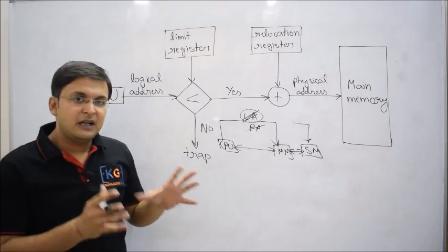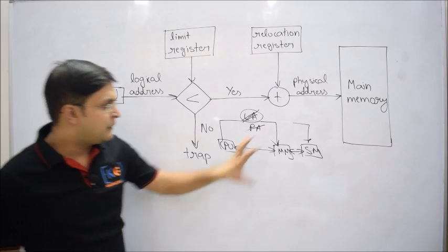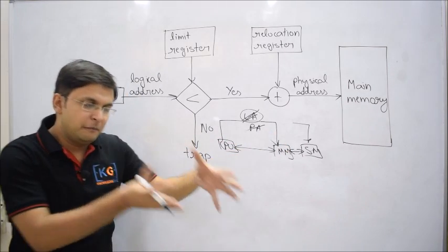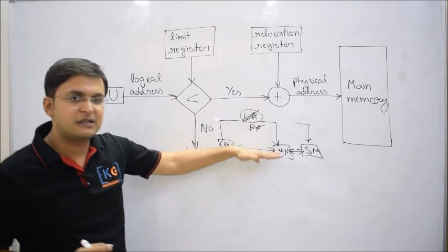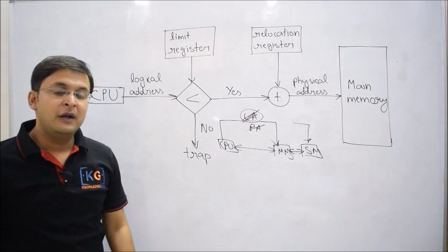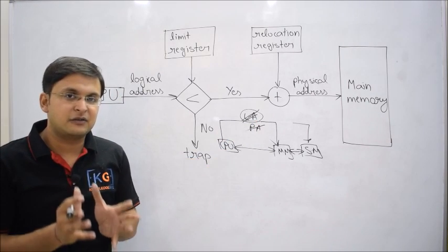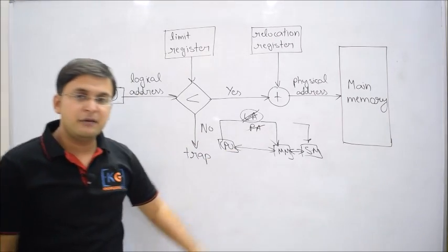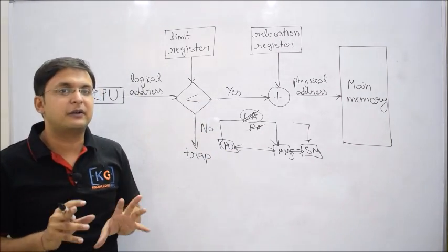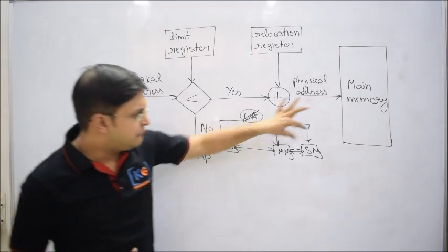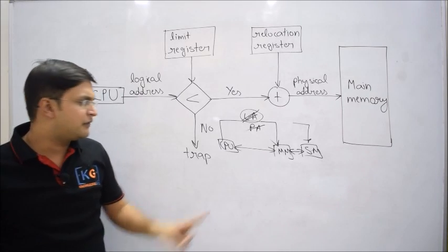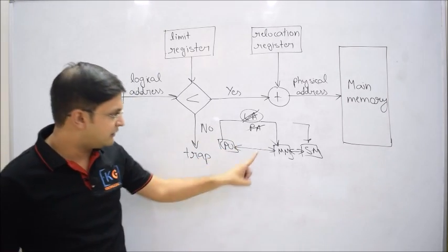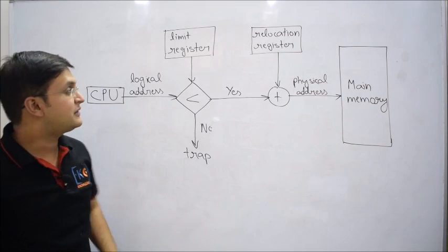In contiguous memory allocation, address translation is a very easy task. When you pick a process from secondary memory and push it into main memory, it is placed in a contiguous fashion. So if you know only the base address from which the process is placed, you can decode the entire address. In non-contiguous allocation it would be difficult because the process is fragmented into small partitions. But in contiguous allocation, you just require the base address — once you have it, you add the instruction number you want and you get the physical address.